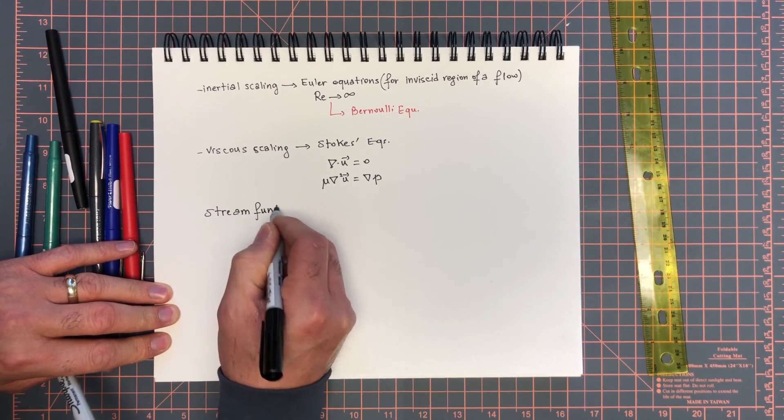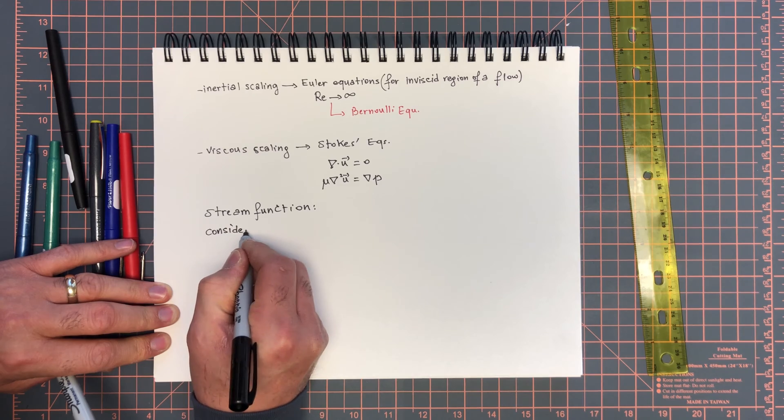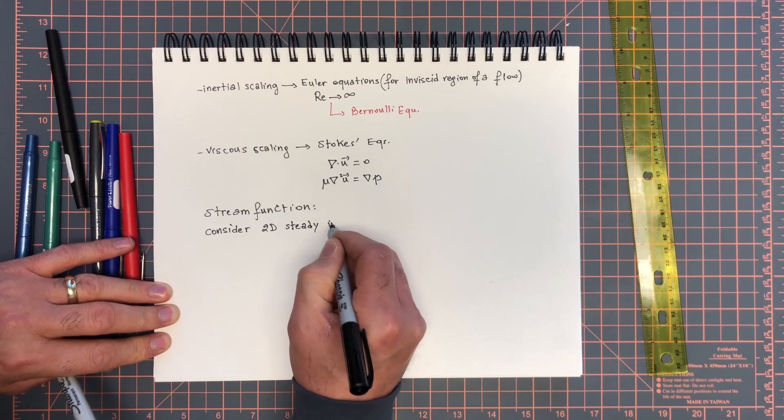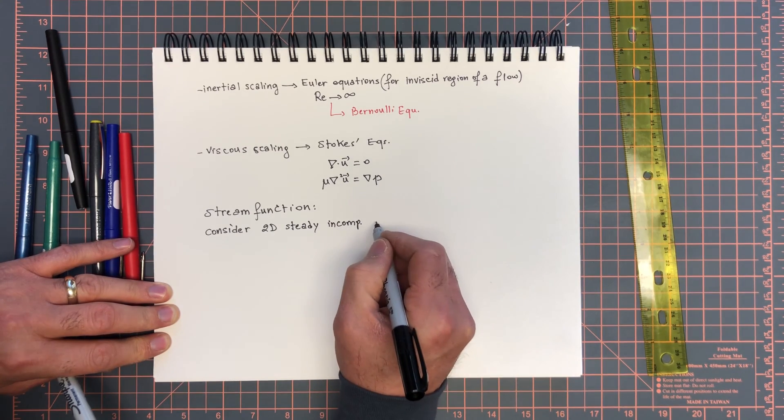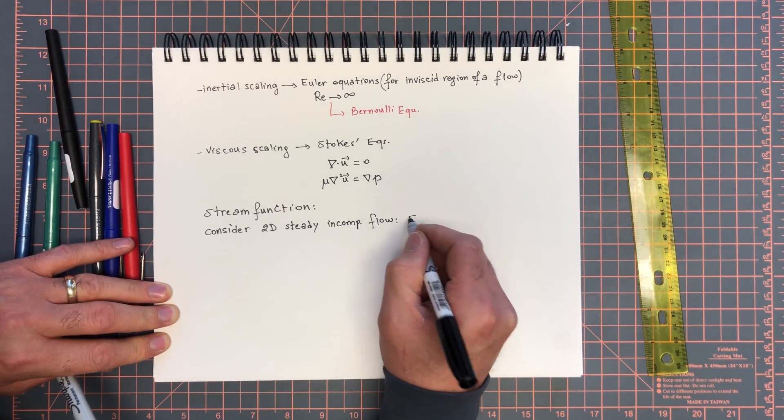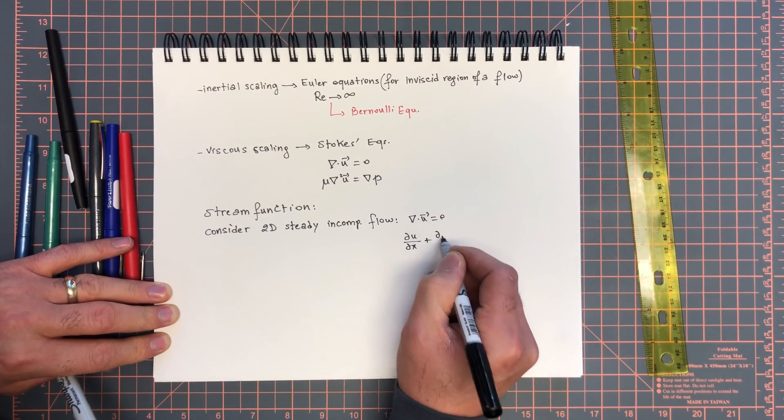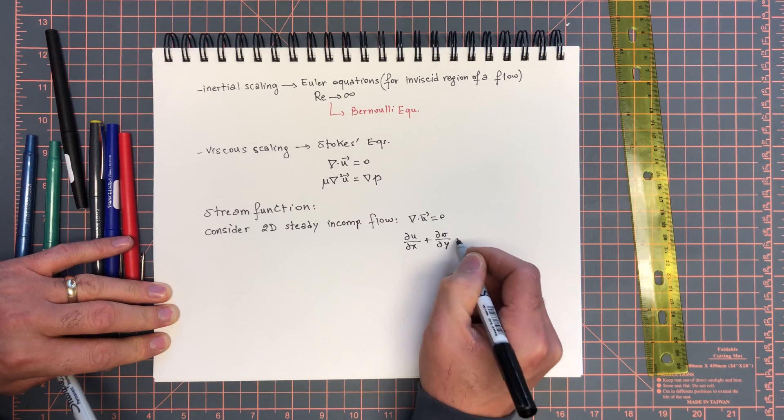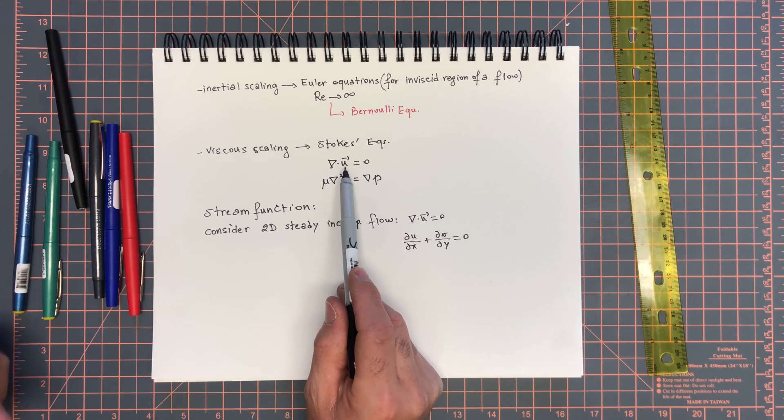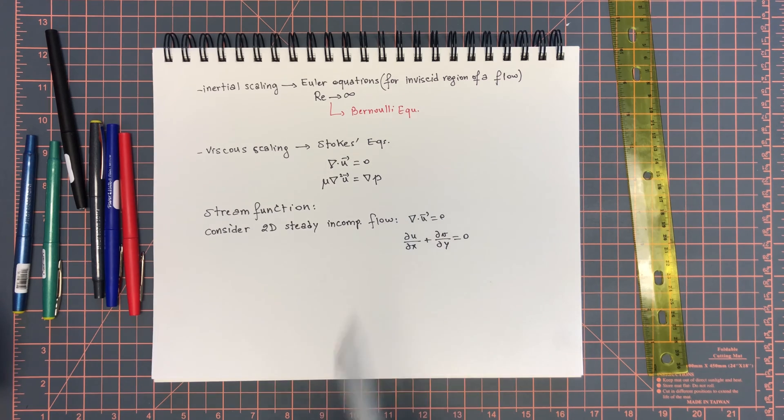Consider 2D steady incompressible constant density flows. The condition div u equals zero is simply du/dx plus dv/dy equals zero. There are as many equations as there are unknowns, however it's just intractable. So it would be nice if we can reduce the number of unknowns, u and v, to a single unknown.